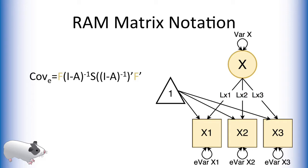Finally, the filter matrix, F, specifies which variables are manifest and which variables are latent.